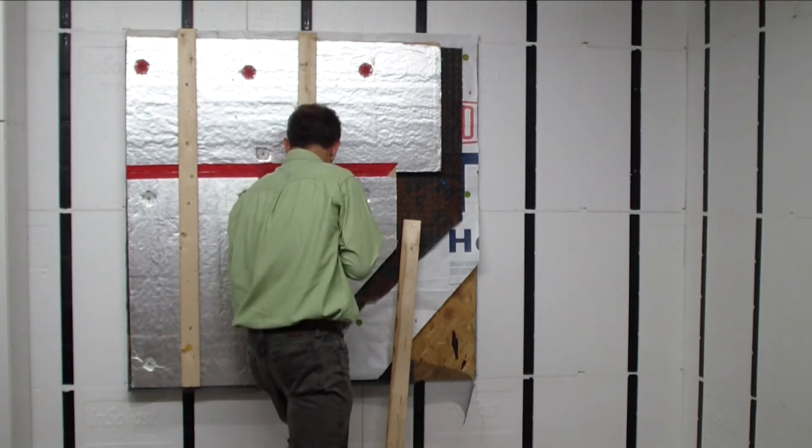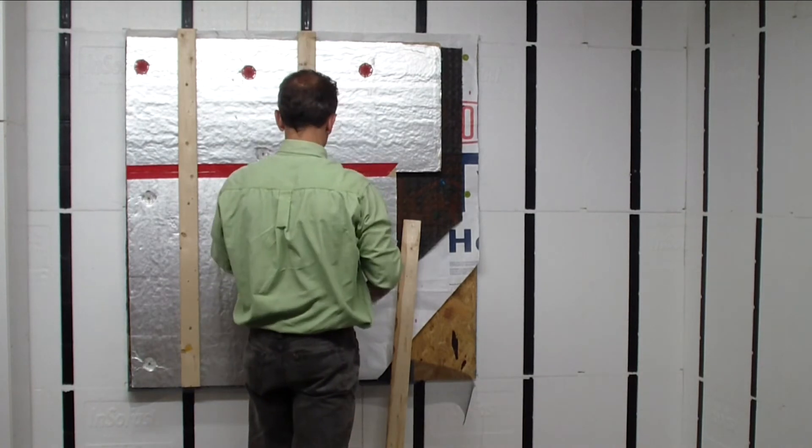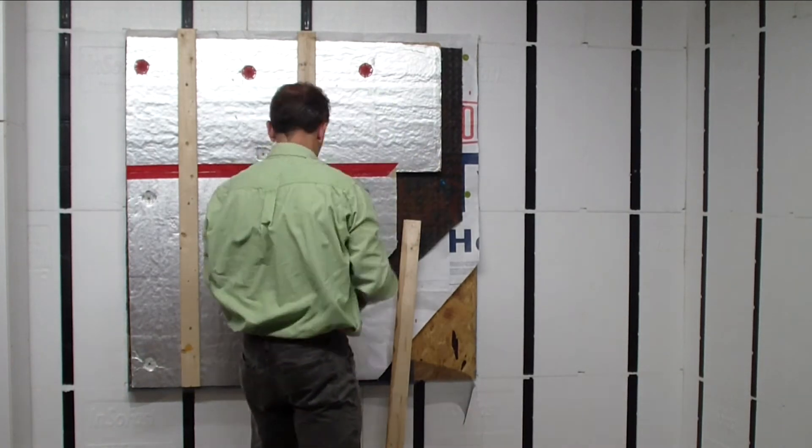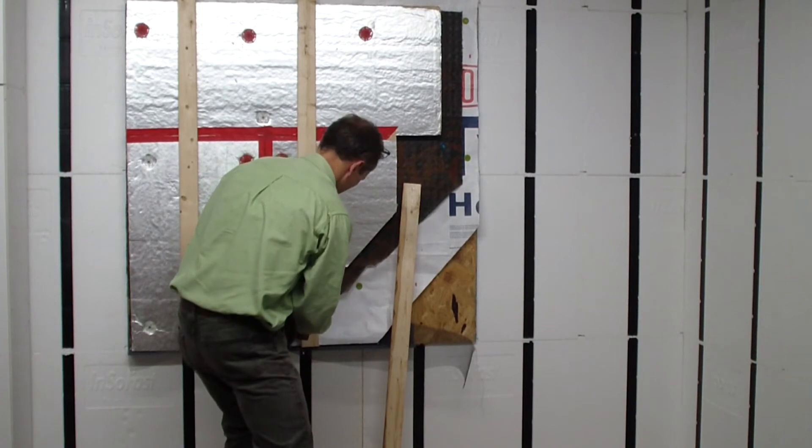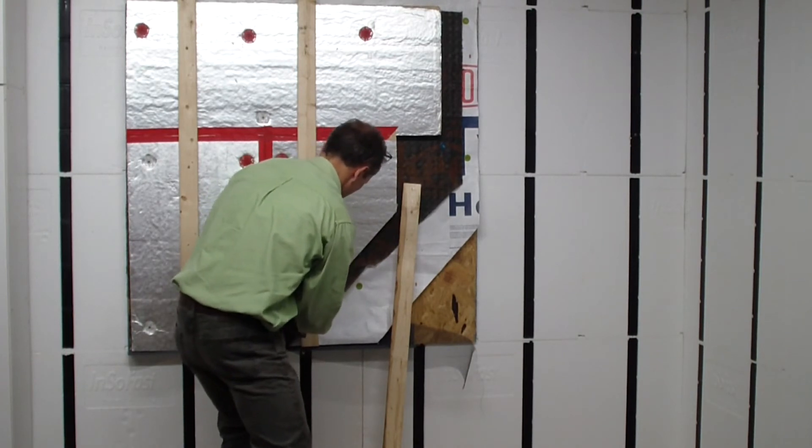You are now ready to finish your exterior wall with stucco, cedar siding, veneer stone, cement board siding, vinyl, or any of the other thousands of available exterior finishes. Good luck!